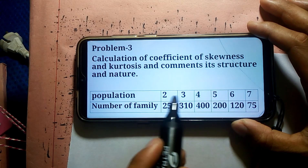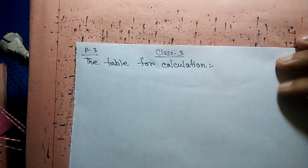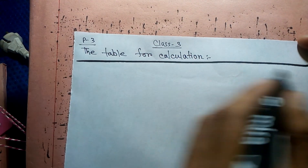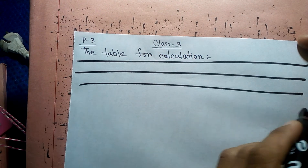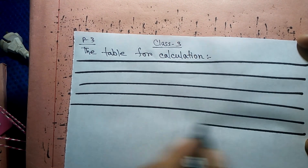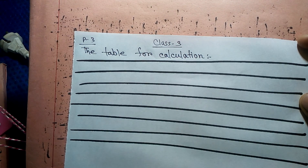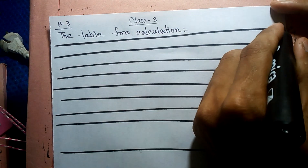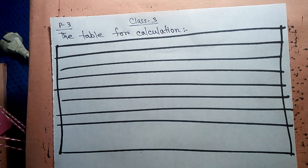We have columns 1, 2, 3, 4, 5, 6, 7, 8. I shall mark the bottom. This is 8 to 8, this is 9 to 8.